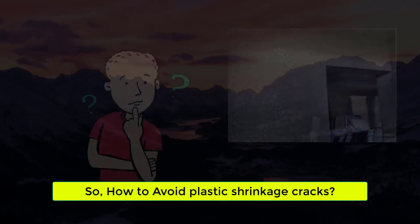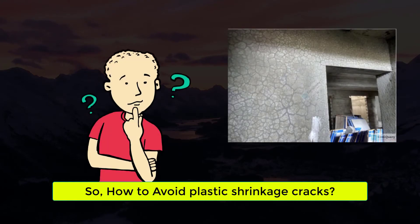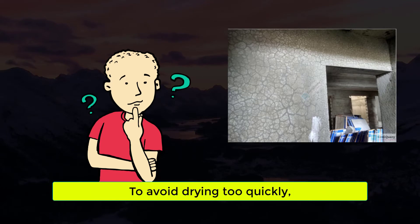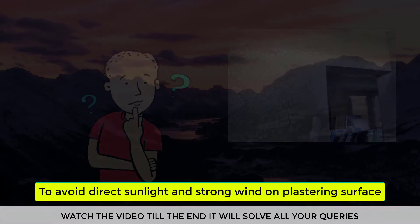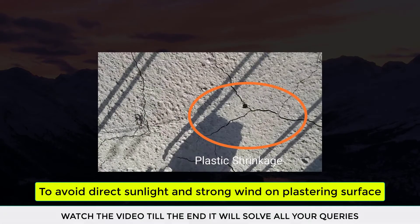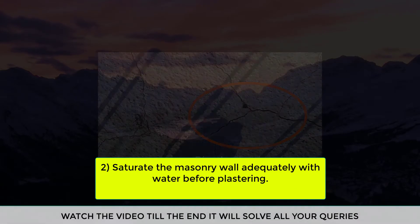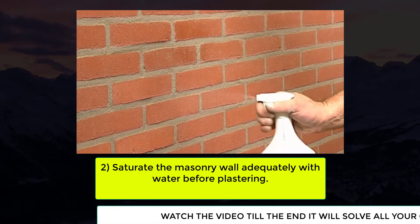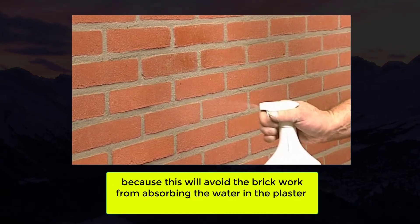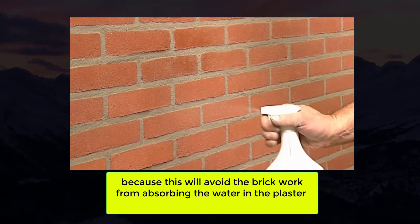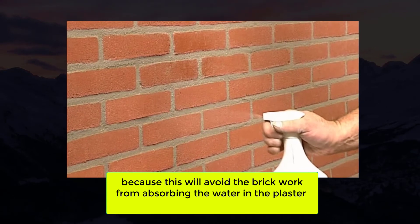How to avoid plastic shrinkage cracks: protect the plaster from sun and wind to avoid drying too quickly. Time plastering to avoid direct sunlight and strong wind on plastering surfaces. Saturate the masonry wall adequately with water before plastering, because this will avoid brickwork from absorbing the water in the plaster.